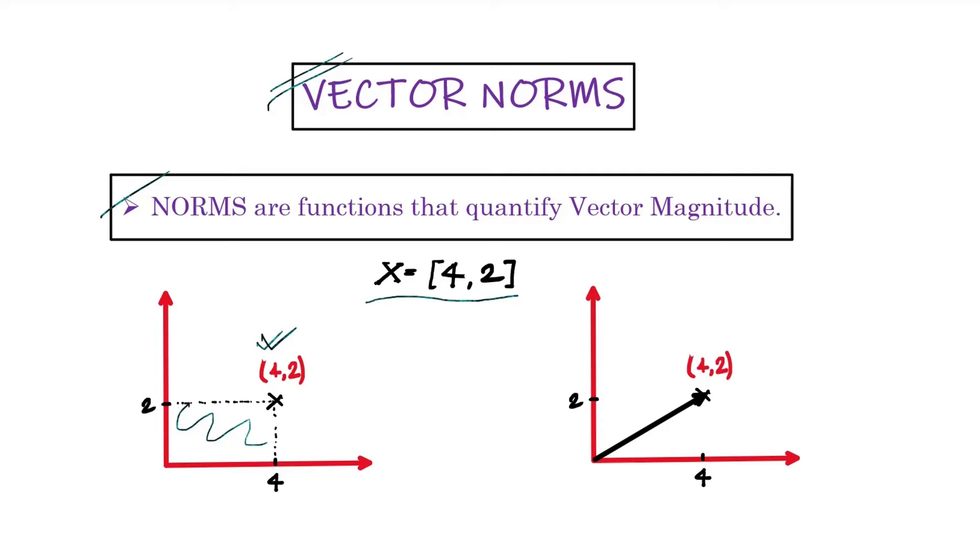However, this is not the only way to represent a vector. A vector can also be represented by its magnitude. The example you can see on the right-hand side shows the same vector, but this time with the help of its magnitude, which is denoted by this arrow. When we are representing a vector by its magnitude, this is when the concept of norm comes into the picture.